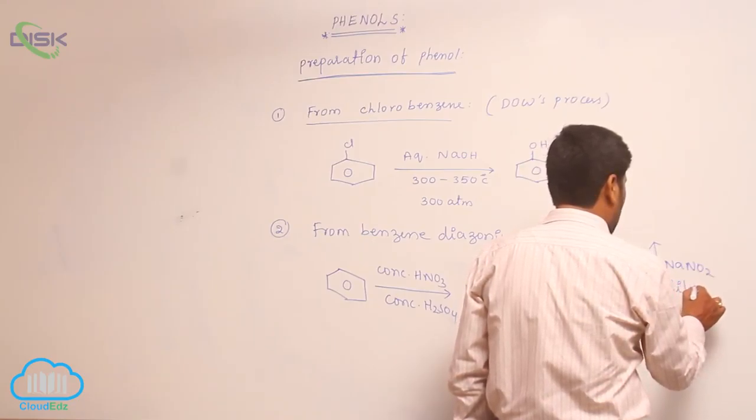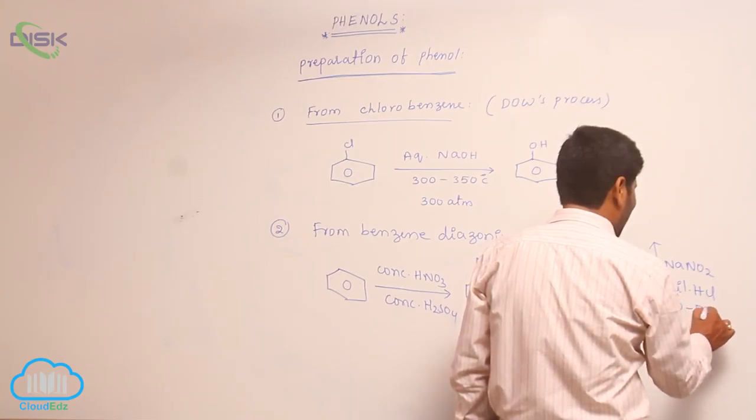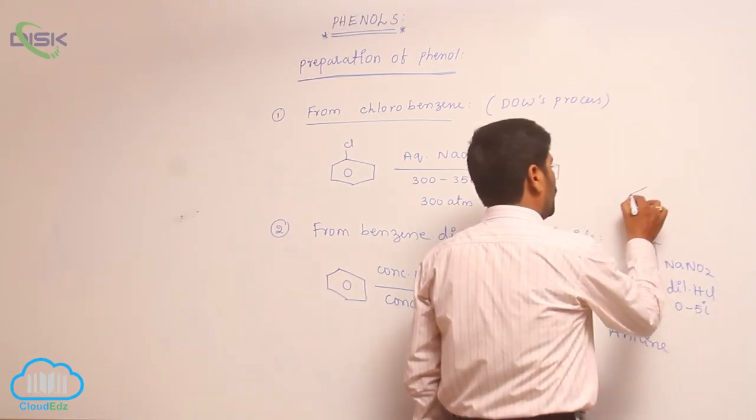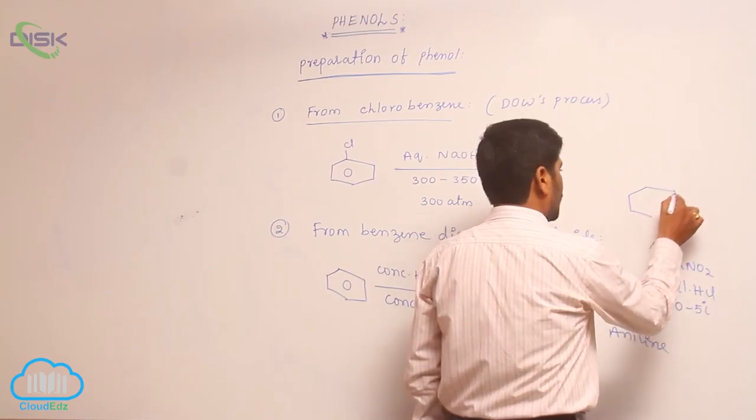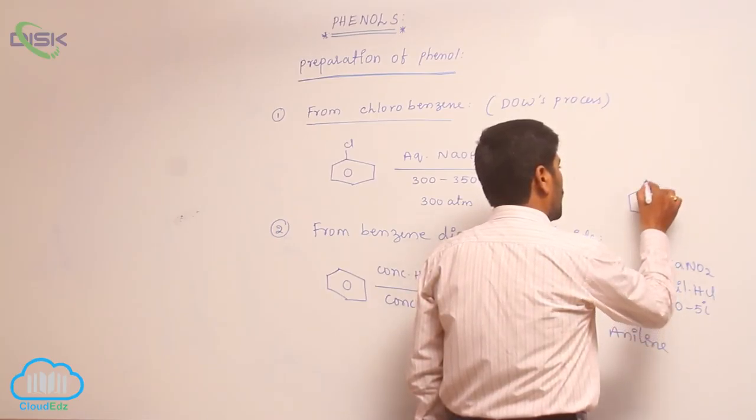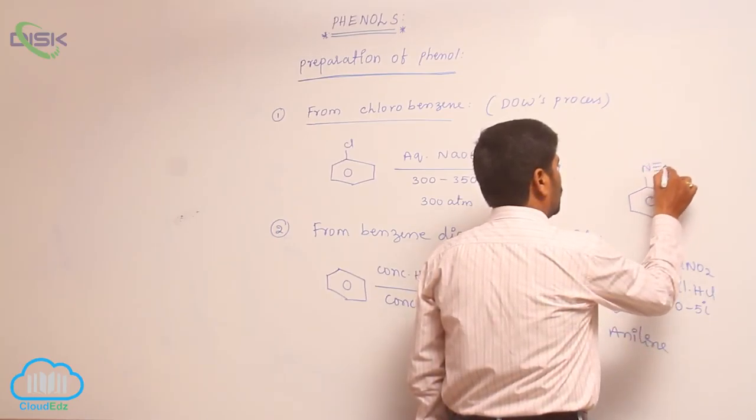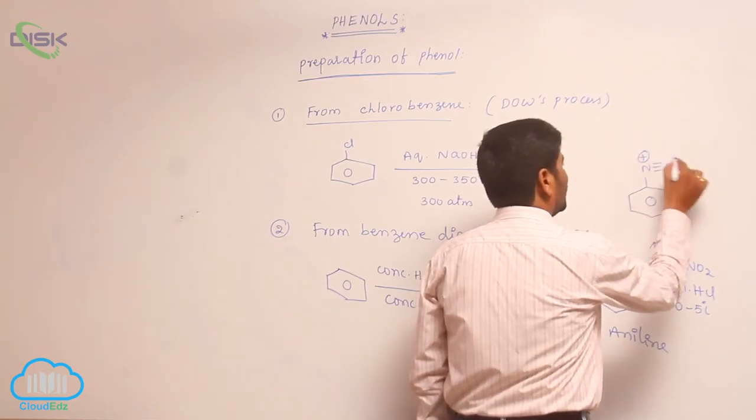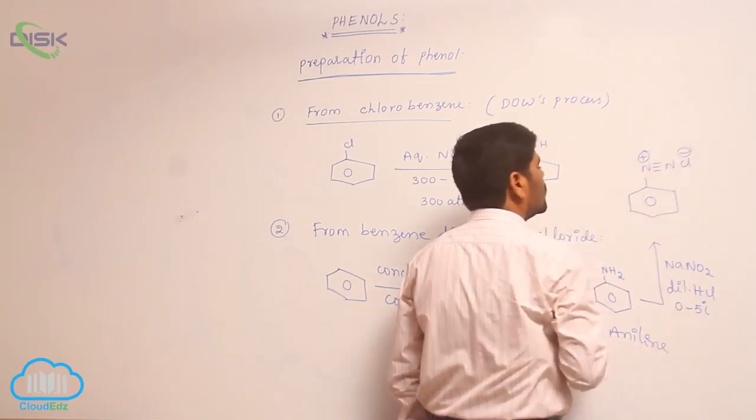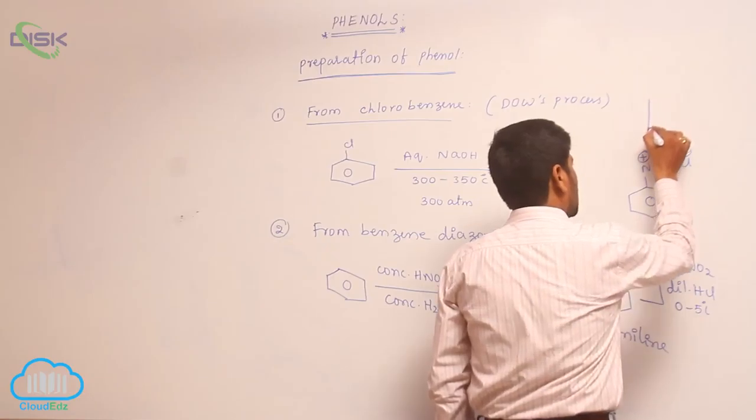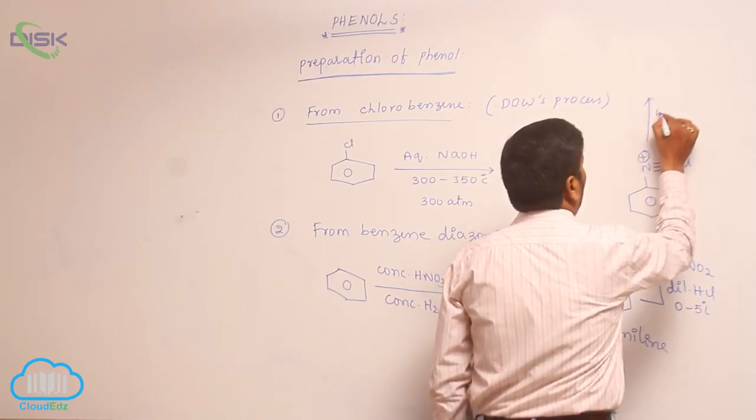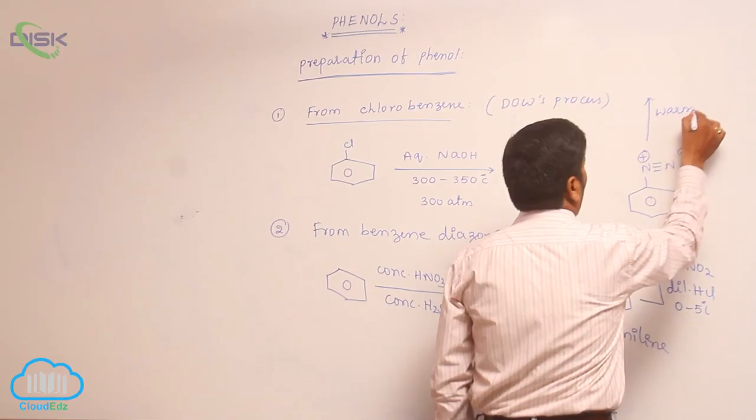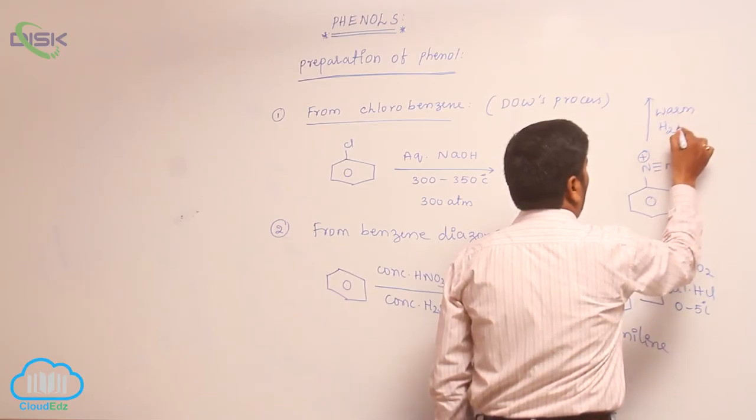At 0 to 5 degree centigrade to form benzene diazonium chloride. This benzene diazonium chloride warmed with water.